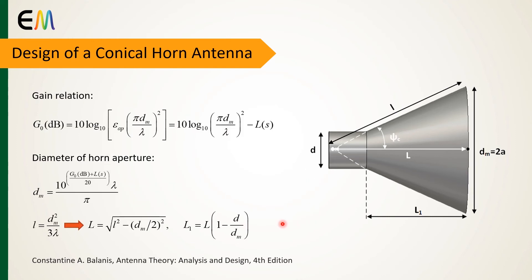The gain of the antenna is defined as this equation that's proportional to the diameter of the horn aperture and the loss figure. Therefore, the diameter of the horn aperture is calculated using the design gain and the loss figure.